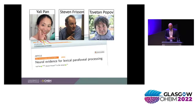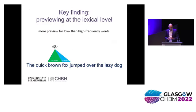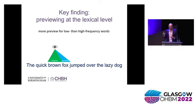I'm going to show you a study now, spearheaded by Yali Pan, where we have been finding evidence for peripheral word processing at the lexical level. The key finding is that we can actually show that 'fox' is being processed at the lexical level. We have the pre-target word — in this case 'brown' — and the target word 'fox,' and what we can manipulate is the lexical frequency of the target word. It turns out that when we manipulate this, there's more previewing allocated to low-frequency words — words that are quite rare.